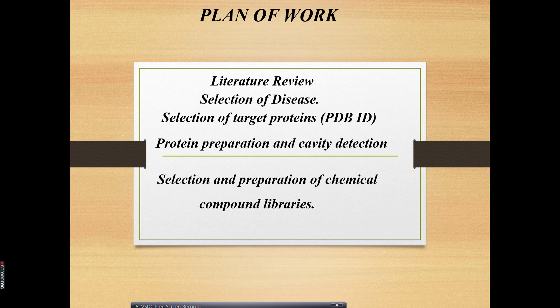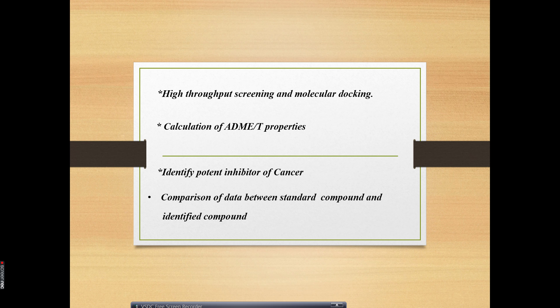Once you have detected the cavity, you then proceed to selection and preparation of chemical compound libraries. Many compound libraries are available. Once you get the chemical identity, with the help of software you make changes in that ligand or molecule. Then you go for high throughput screening and ADME properties. You have to calculate absorption, metabolism, digestion, and excretion properties with the help of software, then identify the potent ligand responsible for anti-cancer activity, and take data with the help of docking.